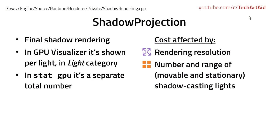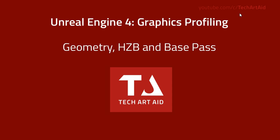Shadow Projection is the final rendering of the shadow — it takes the depth map and renders it back onto the scene, like a projector. In GPU Visualizer, it's shown per particular light in the light category. Unlike Shadow Depth, in Shadow Projection what also matters is the final rendering resolution of the game.